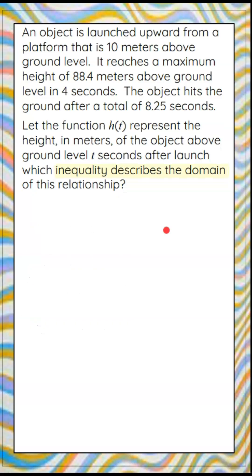So let's begin by creating a model to represent this real-world problem. We know that we have an object that is launched upward from a platform 10 meters above the ground. So here's our ground. We're going to draw it in, and we're going to go 10 meters above the ground, and here's our platform.